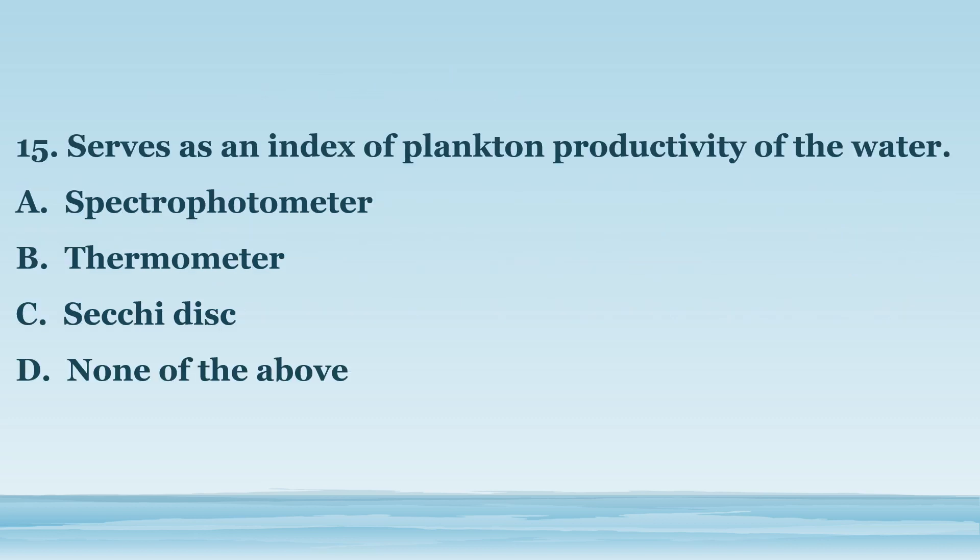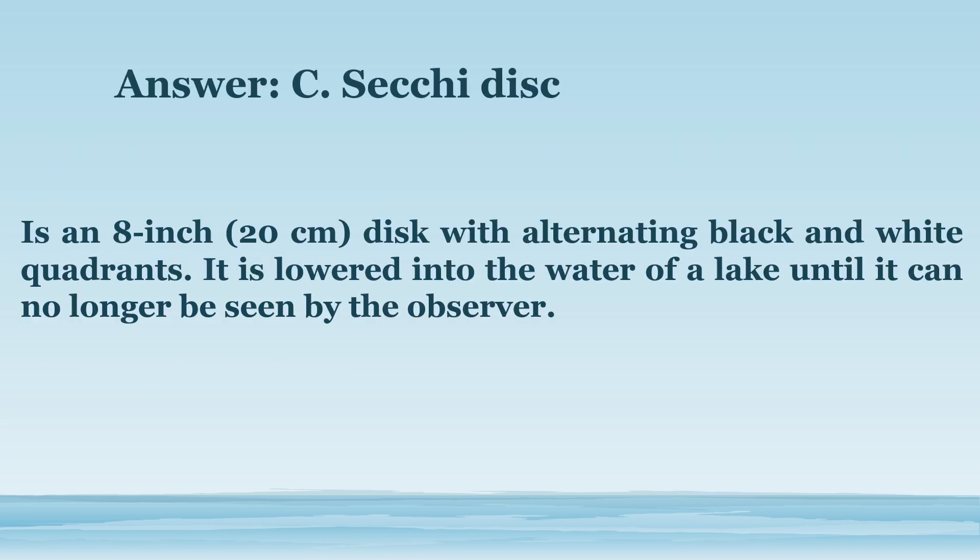Number 15. Serves as an index of plankton productivity of the water. A. Spectrophotometer. B. Thermometer. C. Secchi disc. D. None of the above. The answer is letter C. Secchi disc. Is an 8-inch (20-centimeter) disc with alternating black and white quadrants. It is lowered into the water of a lake until it can no longer be seen by the observer.